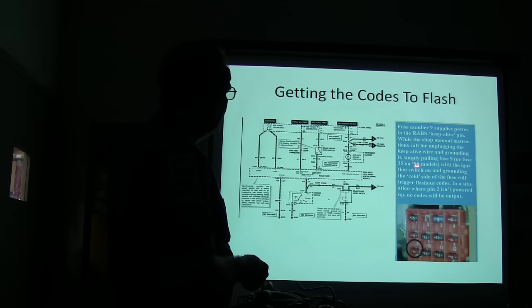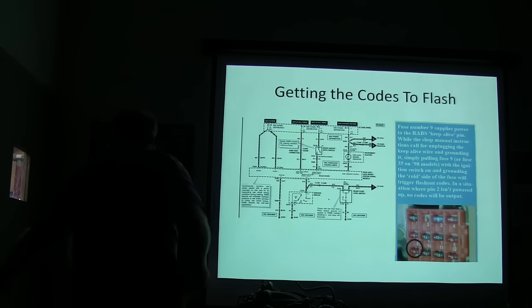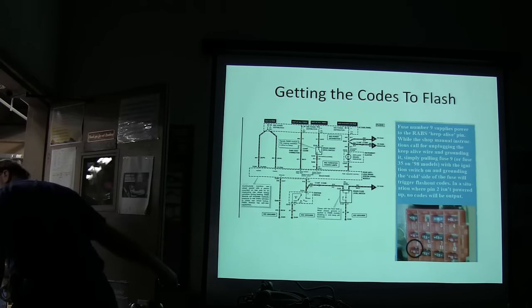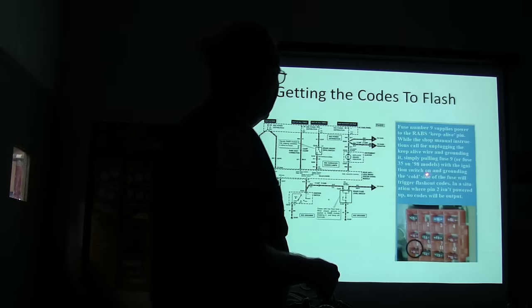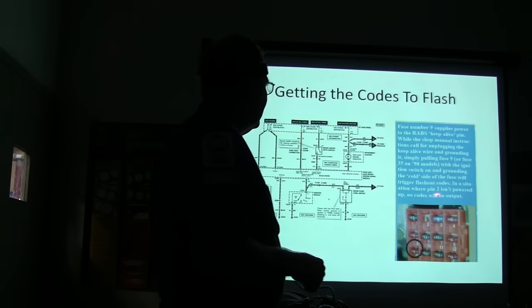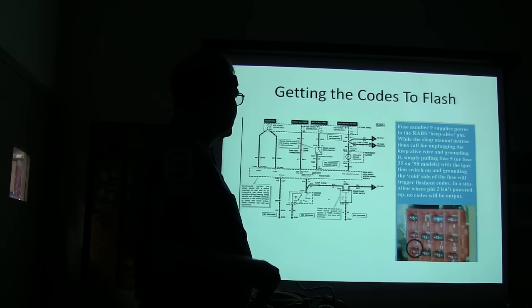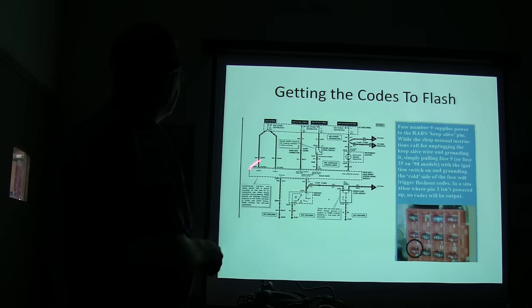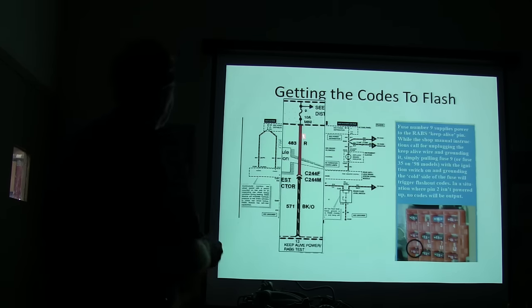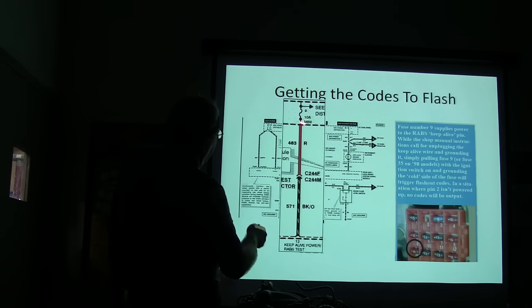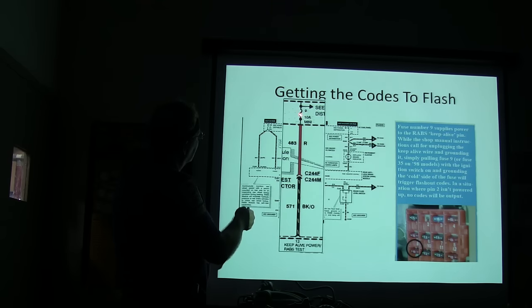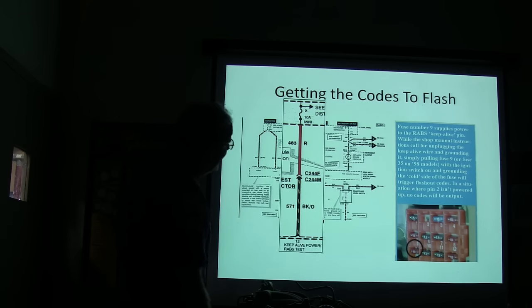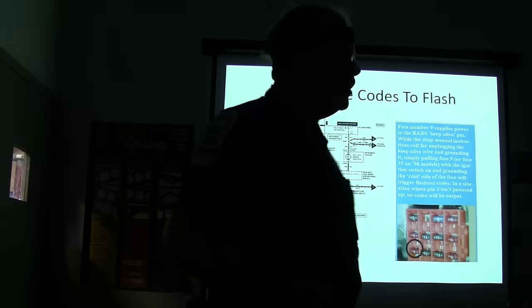But anyway, you could basically pull that fuse, and with the ignition switch on, it then grounds the cold side. Pin two's not powered up, no codes will be flashed. So what you got here is a little schematic here, and that gives you a little bit more detail on that particular thing. That fuse right there is this fuse right here. And on the ranger that we got out here, you'll see a red wire going together with a black-orange wire over the right side.